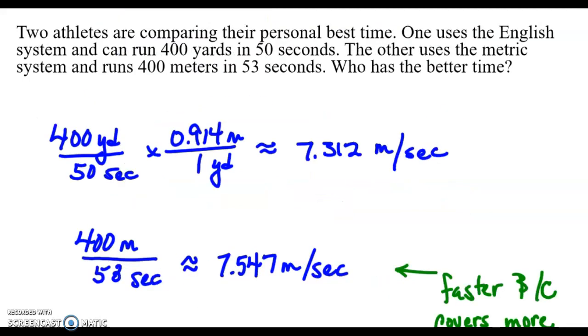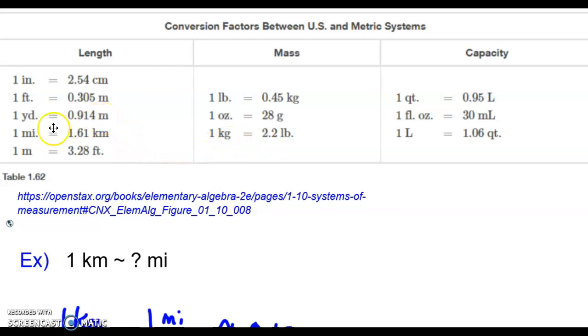Here we have two athletes comparing their personal best time. One is using the English system, 400 yards in 50 seconds. The other is using the metric system, 400 meters in 53 seconds. Who has the better time? This one's a little bit tricky. The first part isn't too bad. We just need to convert to the same type of units. So meters per second makes sense. We can change the 400 yards per 50 seconds into meters per second by using the conversion factor. One yard is 0.914 meters. I put the yard on the bottom so that it canceled, and my answer was going to be meters per second.